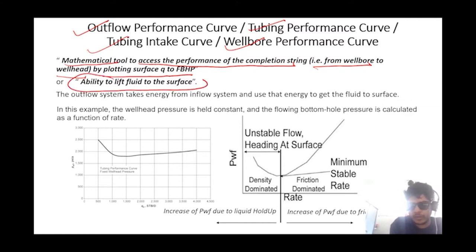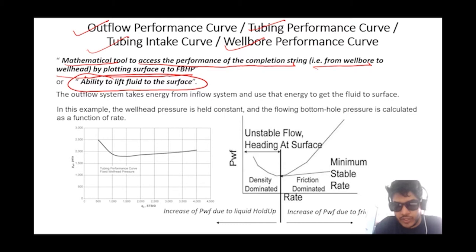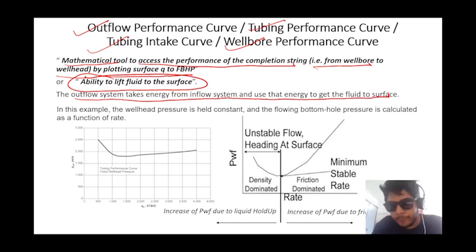In other words, TPR is the ability to lift the fluid to the surface. When we were talking about IPR, we said it is the ability of the reservoir to deliver the liquid into the wellbore. But for TPR, the definition changes: it is the ability to lift the fluid to the surface. The outflow system takes the energy from the inflow and uses that energy to get the fluid to the surface.